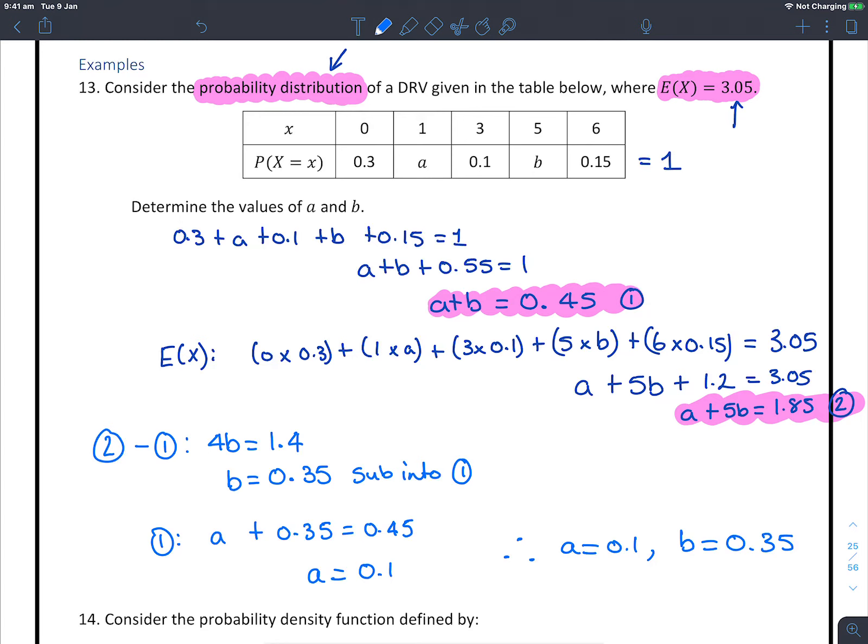So example 13, using our understanding of a probability distribution that they must sum together to give one, and the fact that they told us the expected value, that was kind of our clues that we have two equations we could use. Having two different variables we needed to find, that's the marker that we needed to use simultaneous equations here. We'll go on to example 14 now.